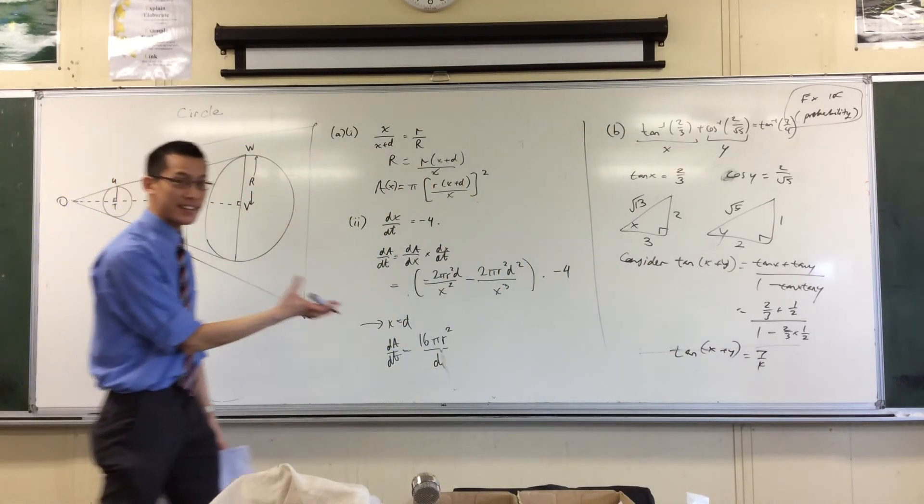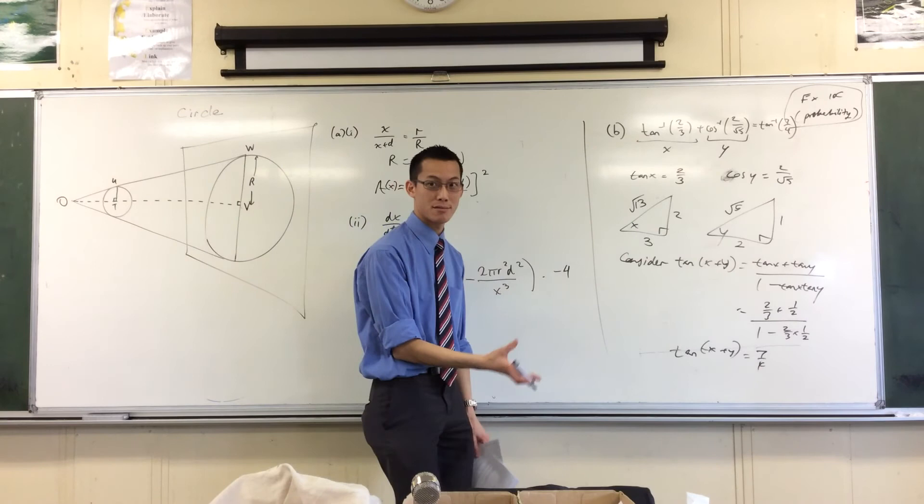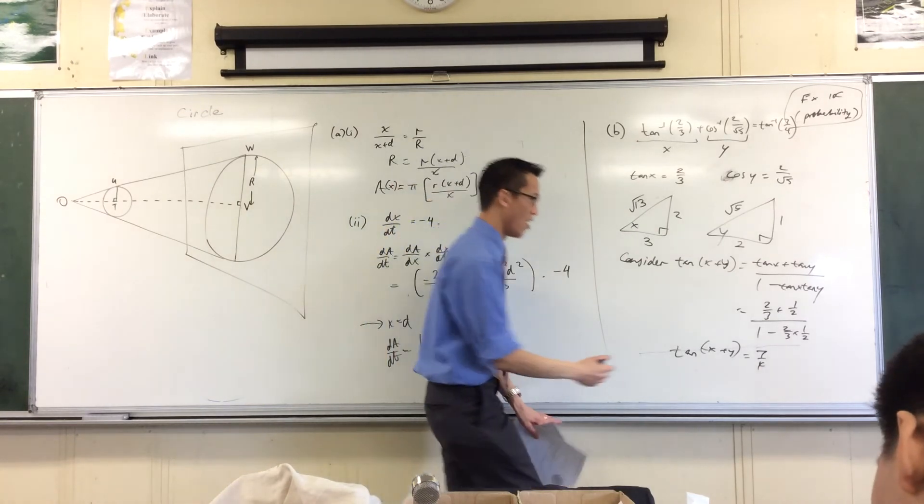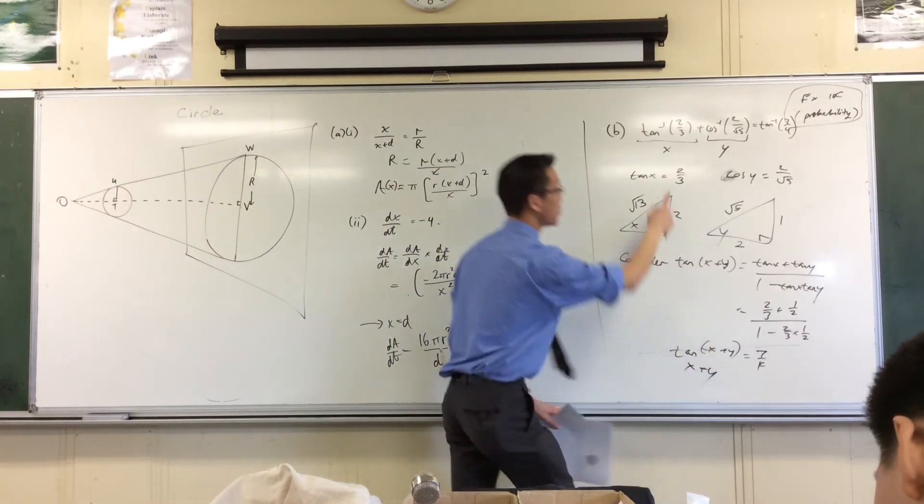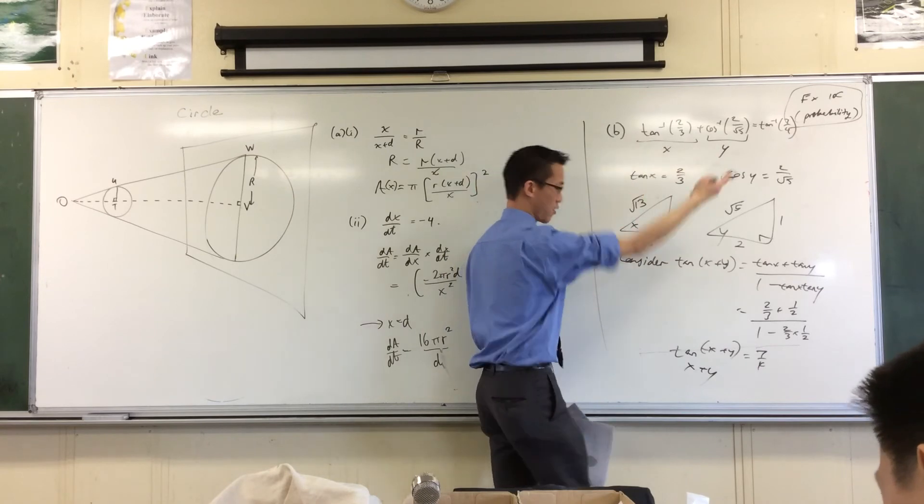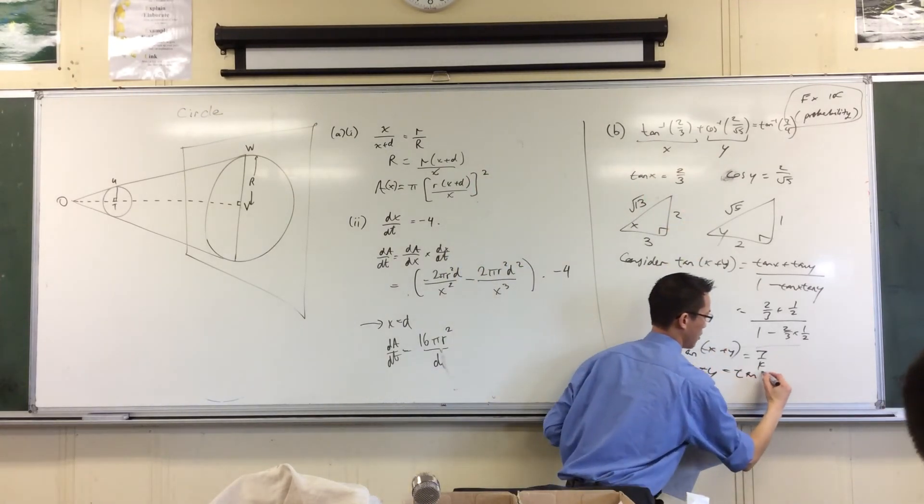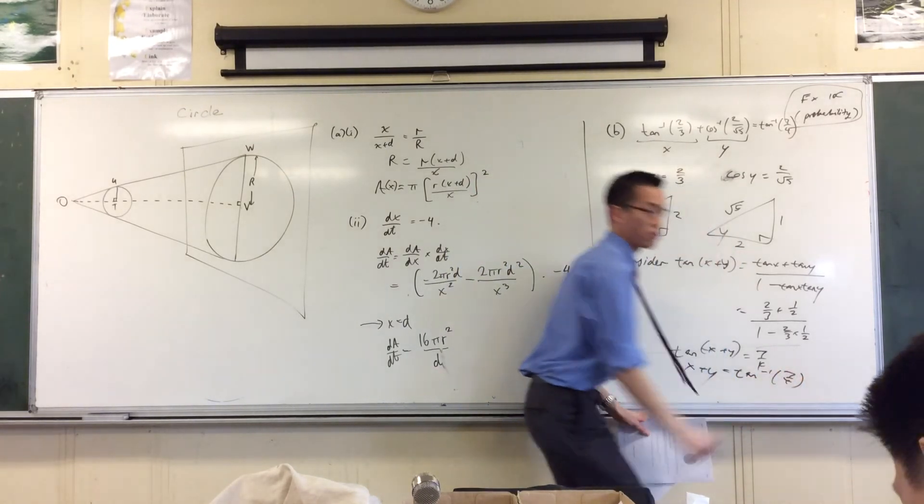And so now you can take tan inverse of both sides, tan inverse of both sides. On this side you just get x plus y, which is this, and then on the right hand side you'll just have tan inverse of 7/4, which is what you needed.